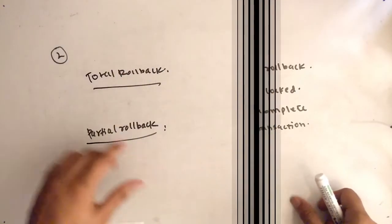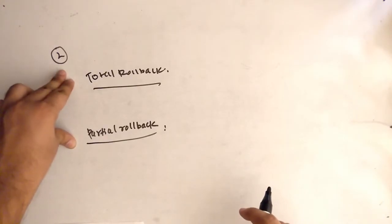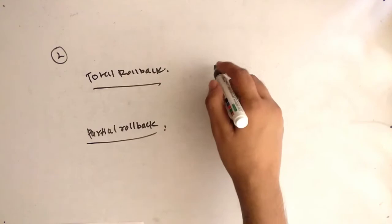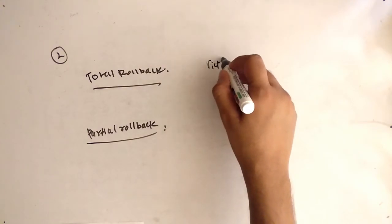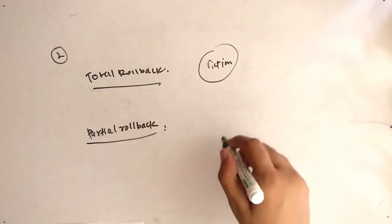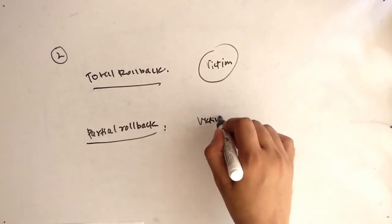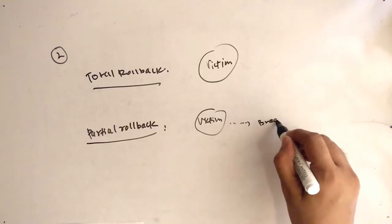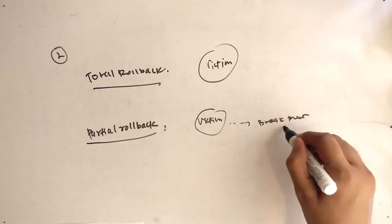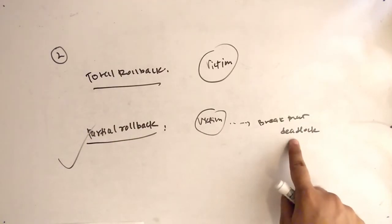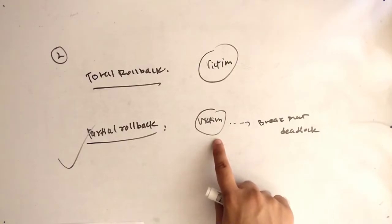The second recovery method is rollback. There are two types of rollback: total rollback and partial rollback. When we talk about total rollback, the victim is selected and then terminated completely. When we talk about partial rollback, the victim is selected but rolled back only up to a certain point so that it breaks the deadlock.